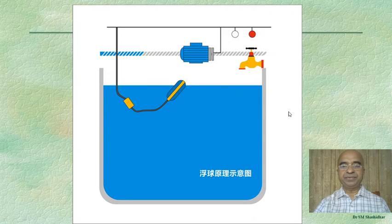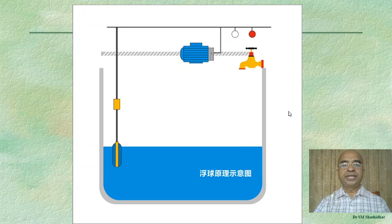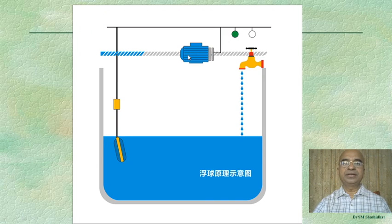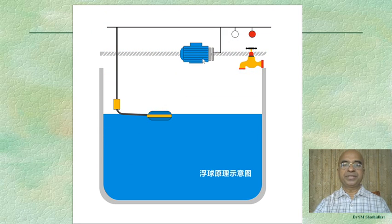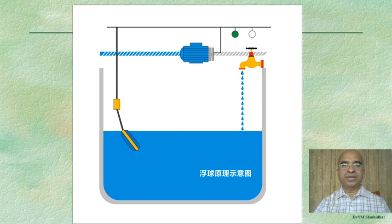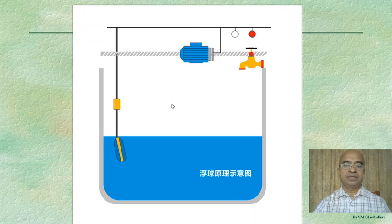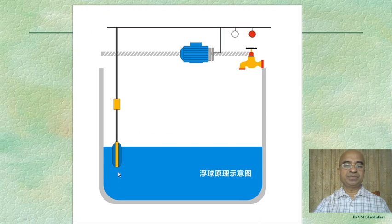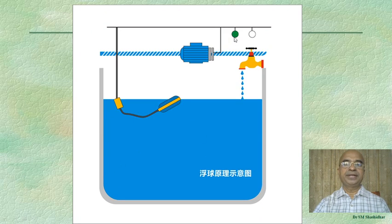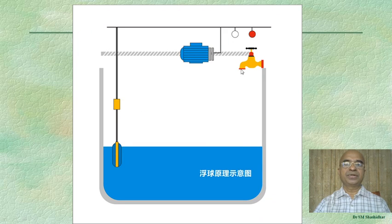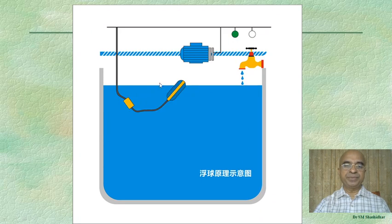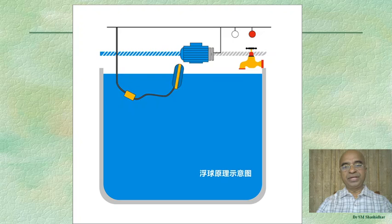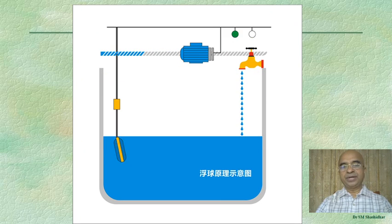An animated gif shows how liquid level is sensed in a tank. We frequently see this in automatic water level management in overhead tanks in our houses. Whenever the water level falls near the bottom, the switch turns on and water is filled up through the tap. When it reaches the maximum level, the pump goes off.